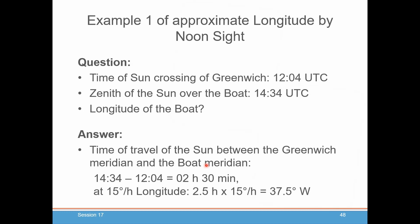So the time of travel of the sun between those two meridians: you take the larger number, 1434, and subtract the smaller number, 1204, and you get two hours and 30 minutes — that's two and a half hours. You multiply that by 15 degrees per hour, and you get 37.5 degrees. Now, how do you know you're east or west of Greenwich? You know that because the sun crossed your boat later than it crossed Greenwich. So you must be west of Greenwich, because the sun moves apparently over the earth from east to west.